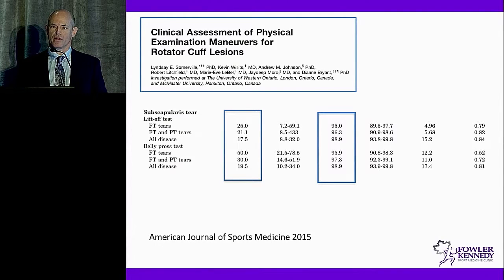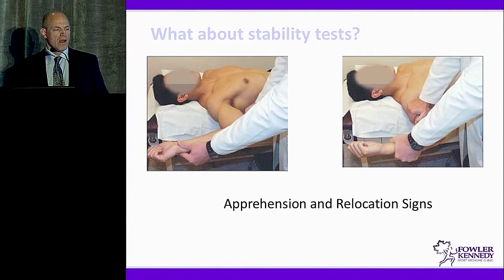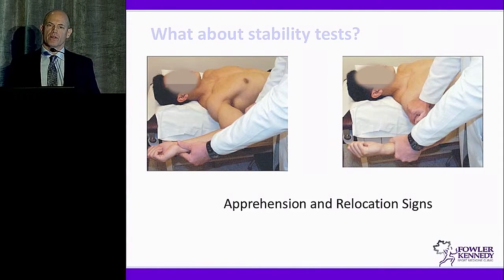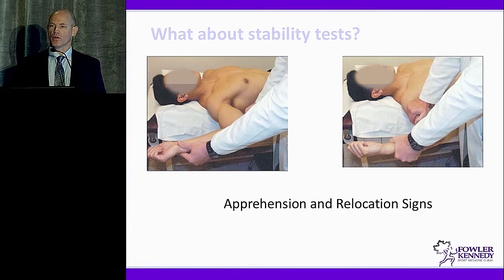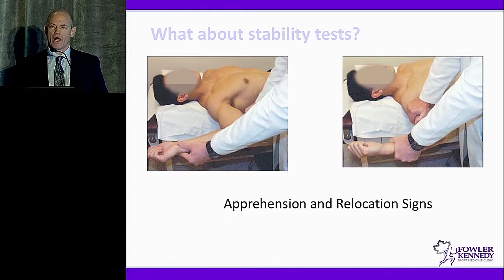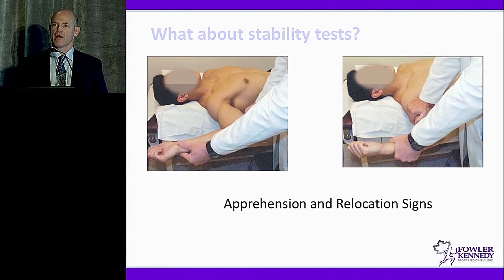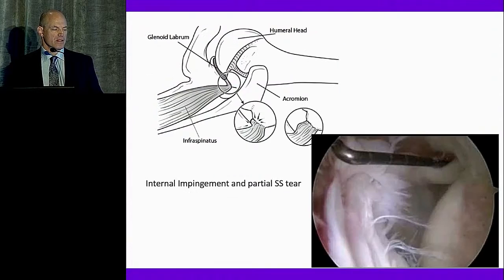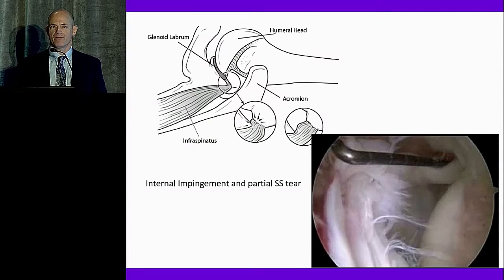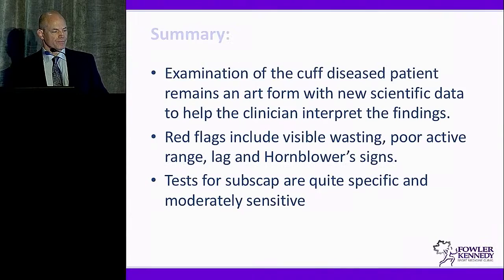I don't routinely perform stability tests unless the history directs me to, but I do use them in the painful young shoulder — particularly the overhead athlete — when looking for internal impingement or undersurface cuff tears. In that context, we're not looking for instability per se, but rather reduction in pain with the relocation maneuver, which disengages the internally impinging lesions — posterior superior labral pathology and undersurface cuff lesions.